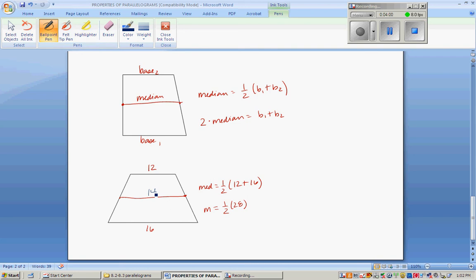What if there are variables here? What if we knew that the bottom was 16, this was 2x, and finally this is x plus 5? If we plug in everyone we know, saying the median equals one-half of base one, 16, plus base two, x plus 5,